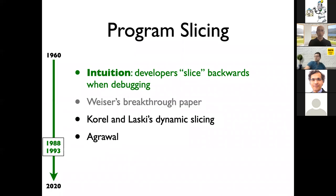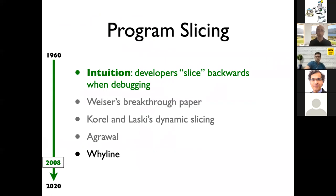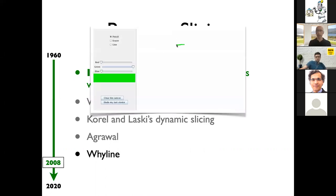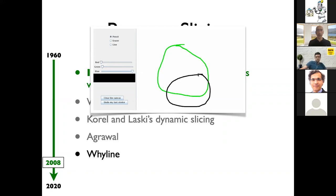The next slicing technique I want to talk about is Whyline, defined by Amy Ko and Brad Myers, about 12 years ago. I'm going to show you in an intuitive way using a demo video available on Amy's page. Here we have a drawing program — you can draw shapes, change the color, draw other shapes. Looking at what happens on screen, you can see something is wrong: you selected blue as the color, but the color on the band is not blue, and the shape that was drawn is not blue — it's actually black.